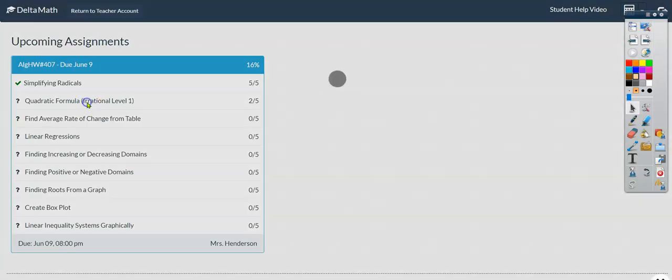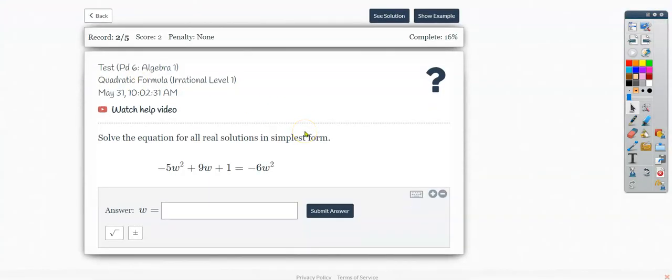Let's take a look at the second topic, the quadratic formula. You first need to know your quadratic formula. You can look it up on a reference sheet if you don't remember it. It is negative B plus or minus the square root of B squared minus 4AC all over 2A.